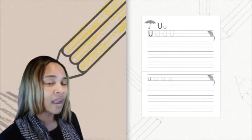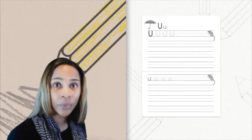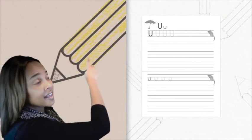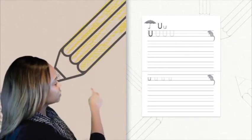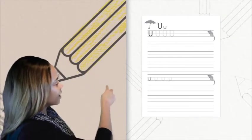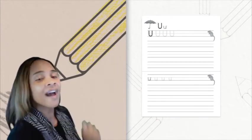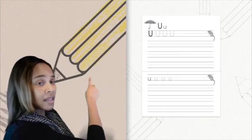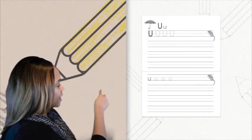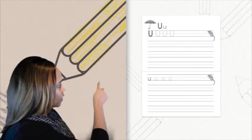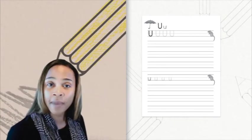Now let's make our uppercase U. Starting at the headline, coming all the way down to the foot line, curving around and going straight back up to our headline. Now let's make the lowercase U. Starting at the belly line, coming all the way down to the foot line, making a curve and going back up to the belly line.